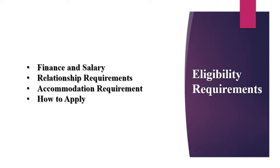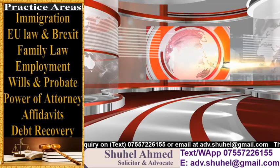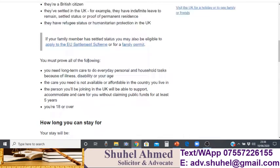The sponsor will be required to give an undertaking to the Home Office stating that they will not claim any public funds for at least five years. This is the basic requirement for this type of visa. Now I'll show you how you can apply for the adult dependent settlement visa.